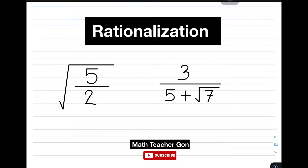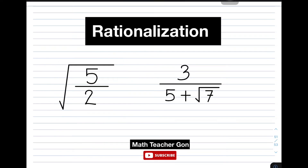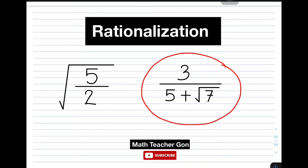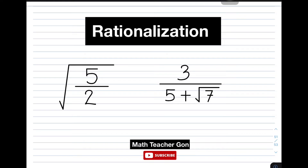I have here two examples that I will show you and teach within our tutorial video. The first one is the square root of 5 over 2, wherein the denominator of this radical is a single term. Next, for the second example, we have 3 over 5 plus the square root of 7, and in this example, our denominator has two terms. If you're new to my channel, don't forget to like and subscribe and hit the bell button to be updated on our latest uploads. Again, I'm Teacher Gon. Let's do this topic.